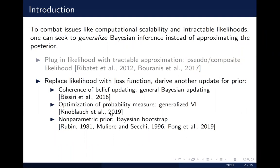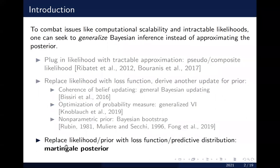The Bayesian bootstrap is similar to the frequentist bootstrap, but instead of simulating multinomial weights, you have smooth Dirichlet weights. Today we're going to take this one step further: replacing both the likelihood and prior with a loss function and a predictive distribution. If we're careful with the elicitation of this predictive distribution, we end up with something more general than the Bayesian posterior — the Martingale posterior.